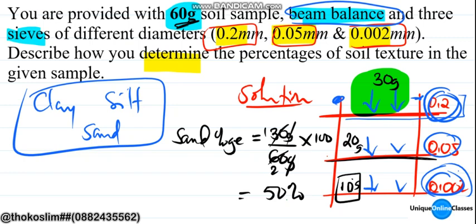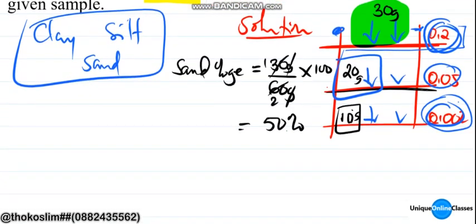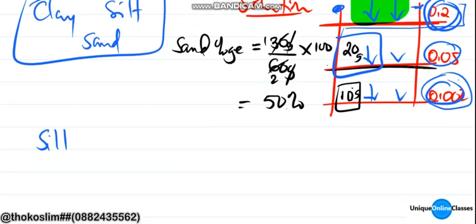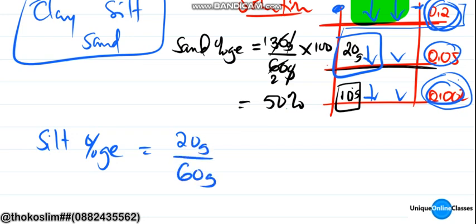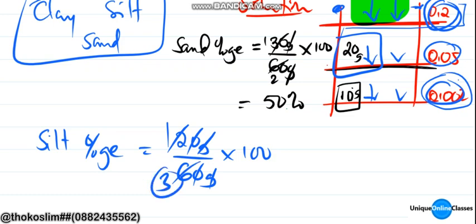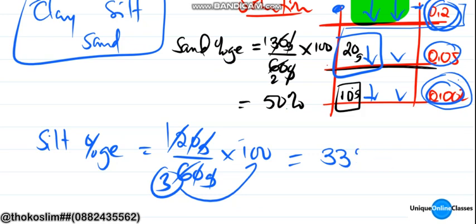Next, the percentage of silt. The silt collected was 20 grams, so we put 20 grams over the total mass of 60, times 100 percent. 20 over 60 simplifies to 1 over 3. One over three times 100 gives us 33.33 percent, so to the nearest whole number that is 33 percent.